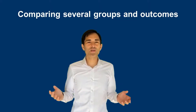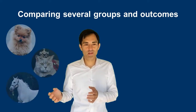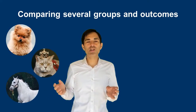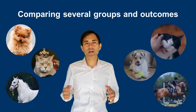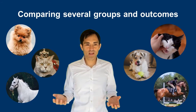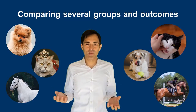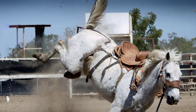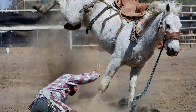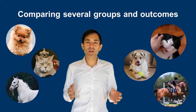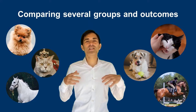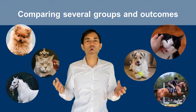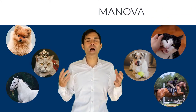We just talked about the case where you can compare several groups, such as dogs, cats, and horses. In addition, you can not only compare different groups, but also compare different outcomes. Think of these animals — how loyal are cats, dogs, and horses? And how many accidents are these animals involved in? So we have different groups and several outcomes. That cannot be tested with a T-test or ANOVA, but what we could do is run a MANOVA.